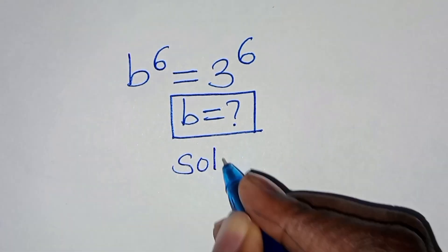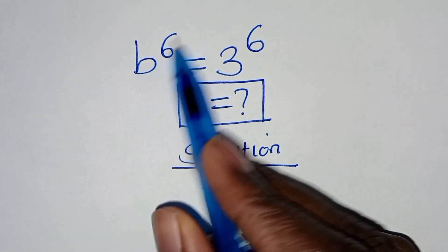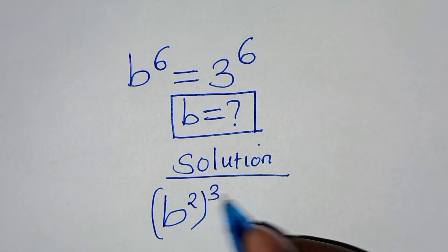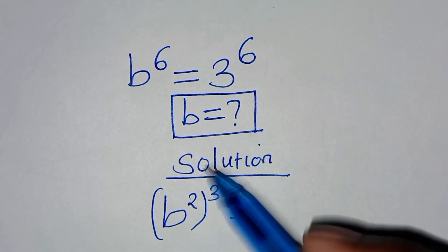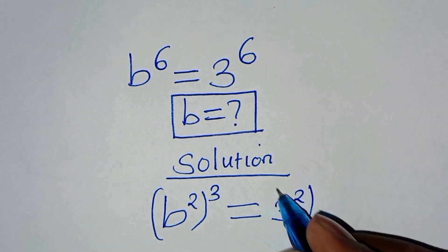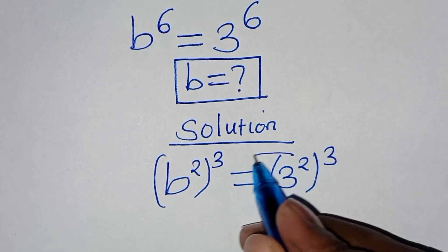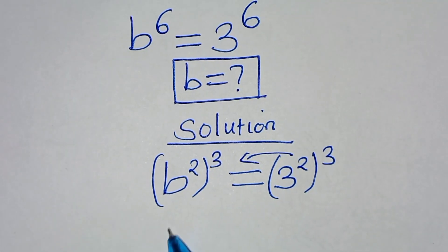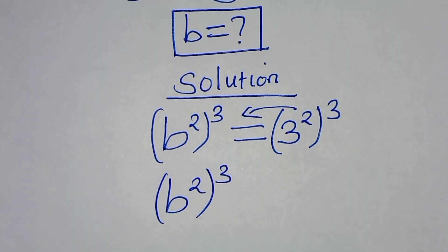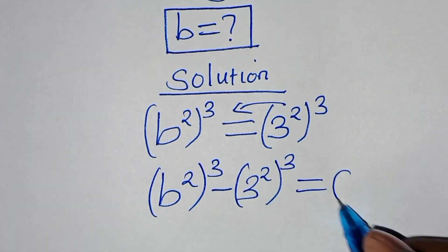Now, the solution from here. We can express b to power 6 as b to power 2 raised to power 3. This is equal to 3 to power 6, which you can express as 3 to power 2 raised to power 3. The next step is to take 3 to power 2 raised to power 3 on the left-hand side, so that we have b to power 2 raised to power 3 subtract 3 to power 2 raised to power 3, equal to 0.